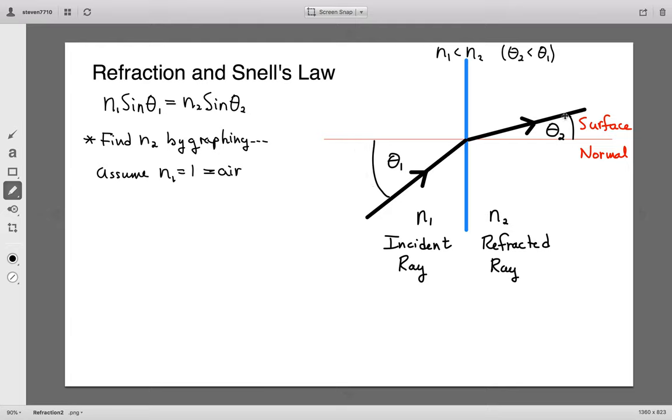So the idea here is if I divide both sides of Snell's law by N1, and again, we know it's going to be equal to one. But in general, it will look like this.